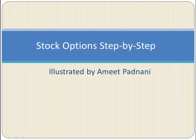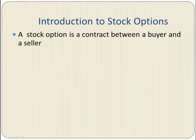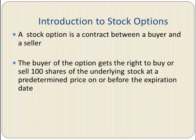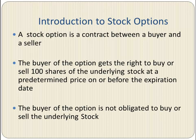In this video, we are going to take a look at the fundamentals of stock options. A stock option is a contract between a buyer and a seller. The buyer of the option gets the right to buy or sell typically 100 shares of the underlying stock at a predetermined price on or before the expiration date. The buyer of the option is not obligated to buy or sell the underlying stock — the buyer will only do so when it's profitable.